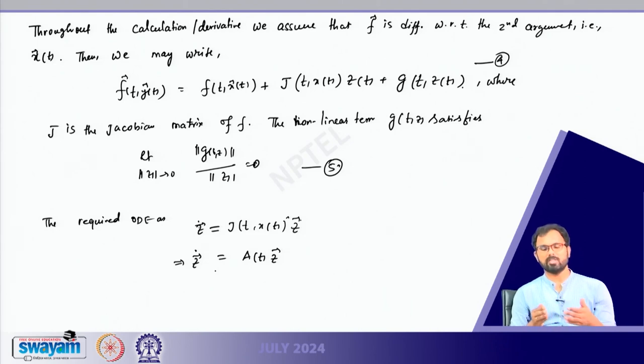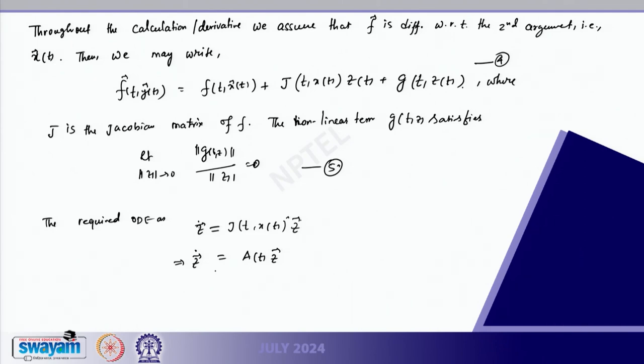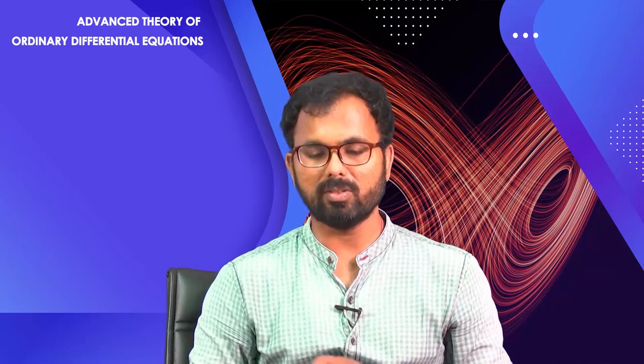This concludes the discussion on linearization of non-linear systems and we will continue in the next class. The next few classes will remain theoretical. I am giving you a gist of the major theorems; for proofs and derivations you can look into the textbooks mentioned in the references. Thank you for your attention.